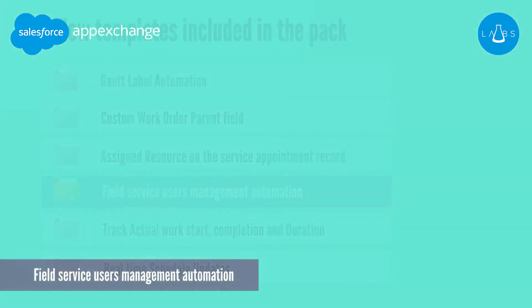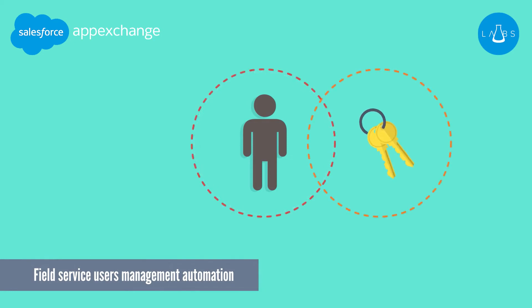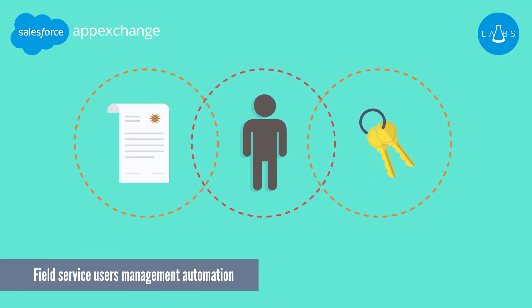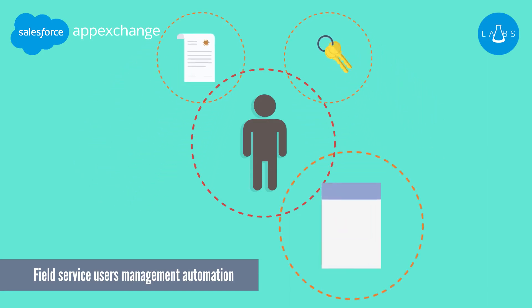This process is used when administrators add new users to the field service application. The feature automates the assignment of permission sets and licenses to the user. In the case of new field resources, the process also automatically creates a service resource record for the user.